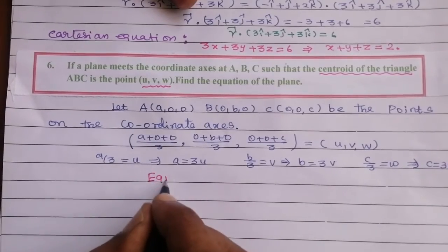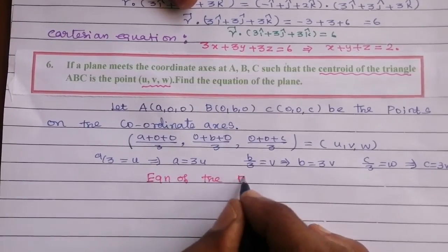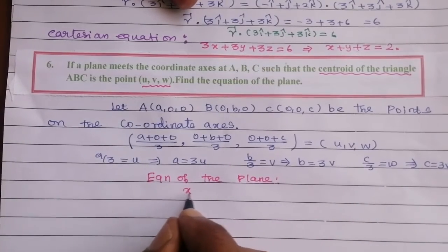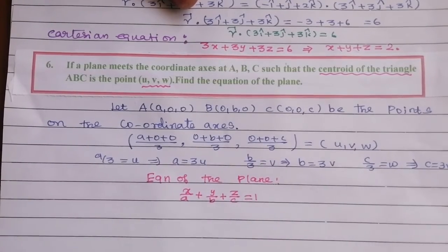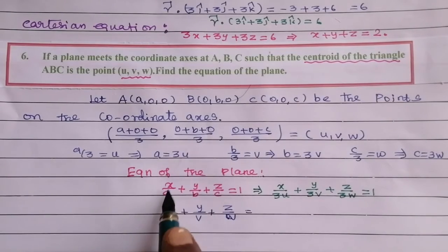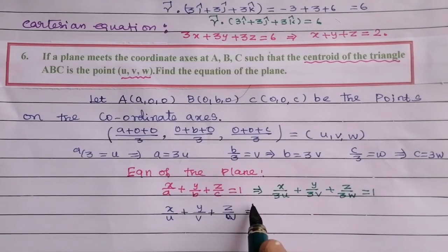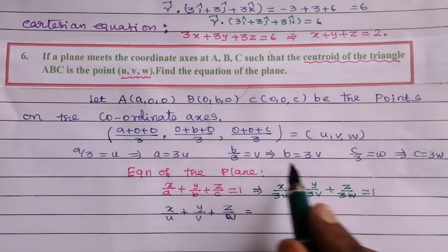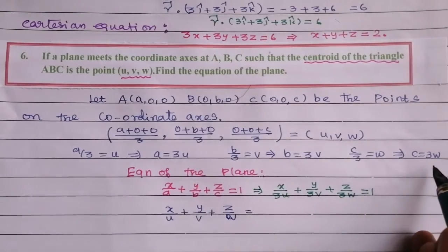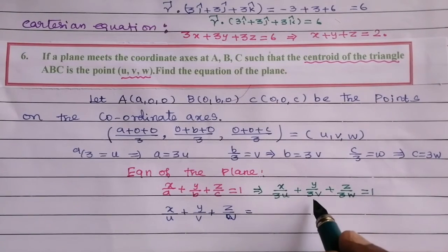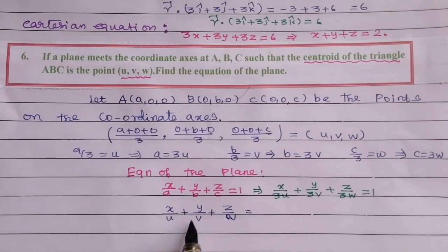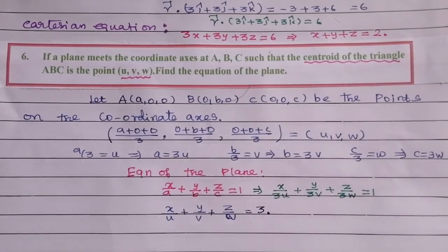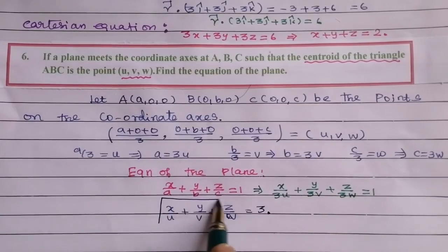Using the intercept form, the equation of the plane is x/a + y/b + z/c = 1. Substituting a = 3u, b = 3v, c = 3w: x/(3u) + y/(3v) + z/(3w) = 1. Therefore, x/u + y/v + z/w = 3. This is the required equation of the plane.